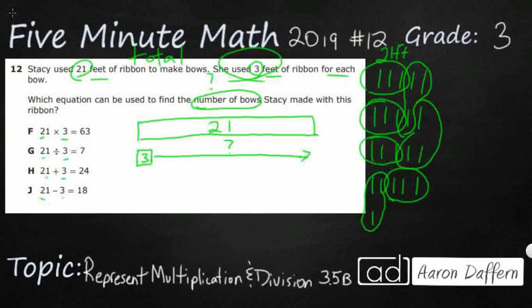So how many sets of 3 did I make? 1, 2, 3, 4, 5, 6, 7. So I made 7 groups of 3, and that made 21 feet. And that makes sense.